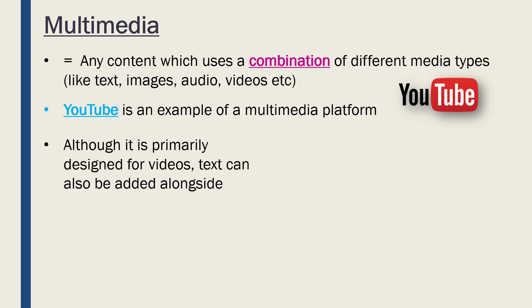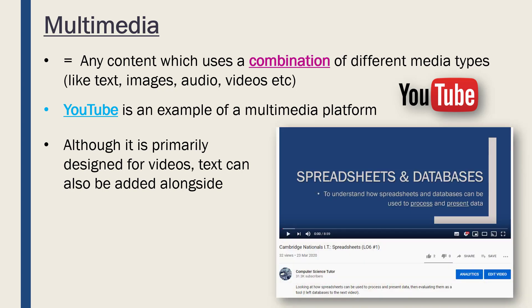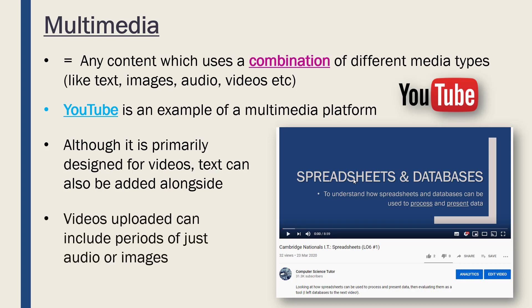YouTube is primarily for videos, which is one type of media, but you can also add text alongside. This is one of my videos — it's got the video, but also I've got a little description beneath it. Text is a different media type to video, so that's multimedia. Within videos you can also have just audio or images, so YouTube is a clear example.